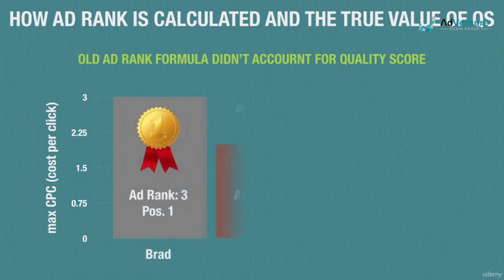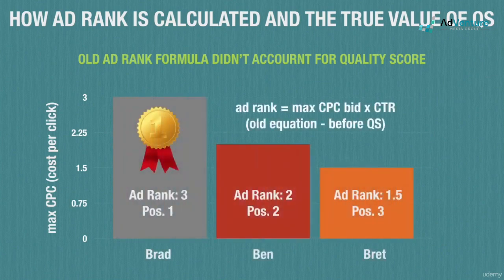Like we saw in our example with Brad, Ben, and Brett, the old formula used to calculate ad rank didn't account for quality score. Essentially the highest bidder won the top slot, since max CPC bid was the most important factor in calculating ad rank. The new formula introduced to calculate ad rank changes things up dramatically, so let's see what that new formula is and what it means for advertisers and their bidding wars.